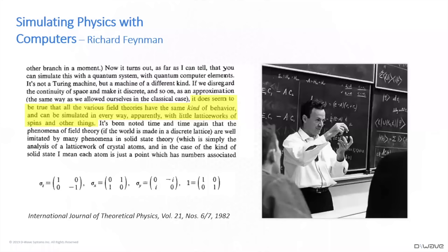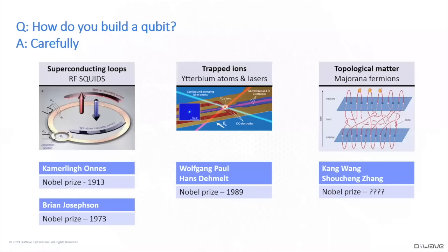And so that started a lot of people thinking about this question: can you actually build a different kind of computer using building blocks that are more like the quantum building blocks that nature has available to it? After a period of time, there was a consensus that yes, perhaps we can think about a new kind of computer. And this building block, instead of being a bit, is now going to be a quantum bit — what we today call a qubit.